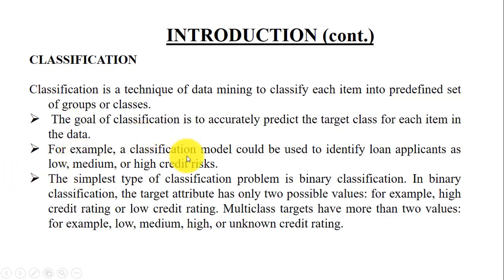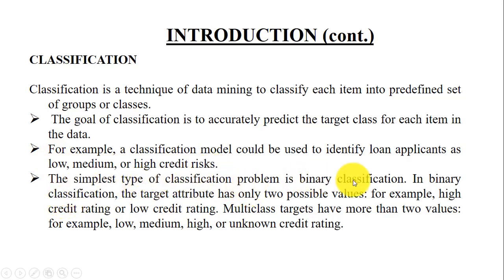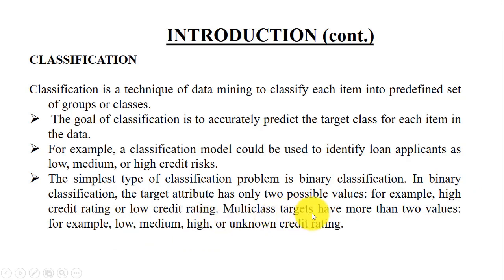For example, a classification model could be used to identify loan applicants as low, medium, or high credit risk. The simplest type is binary classification, where there are only two possible values — for example, high credit rating or low credit rating. In multi-class targets, we have more than two values, such as low, medium, or high credit, or in our case, three sentiment labels: positive, negative, and neutral.